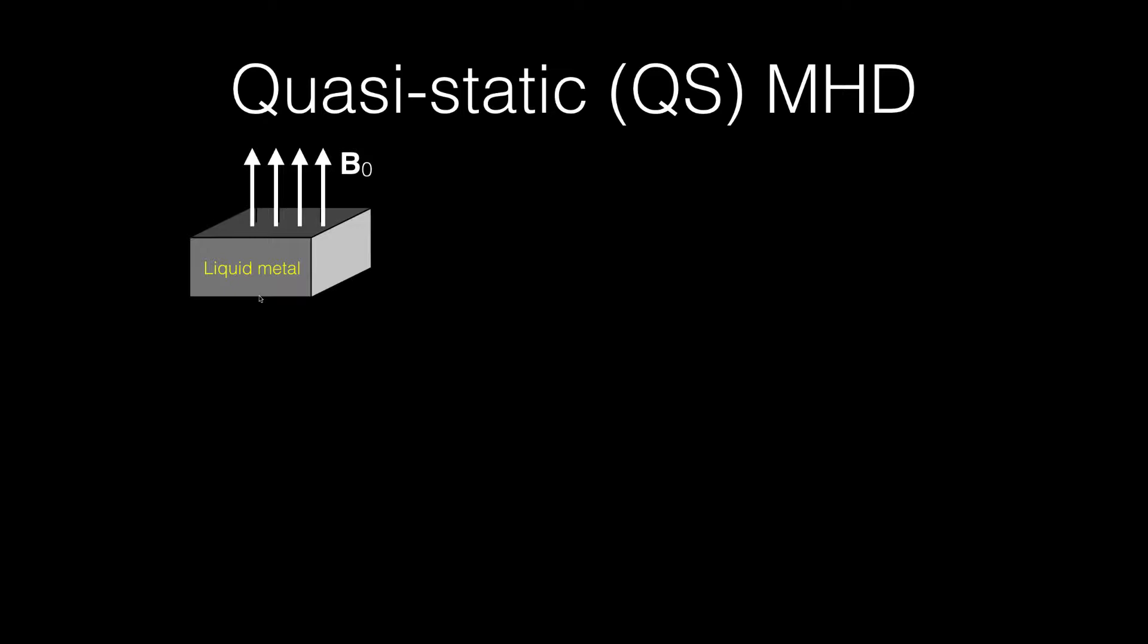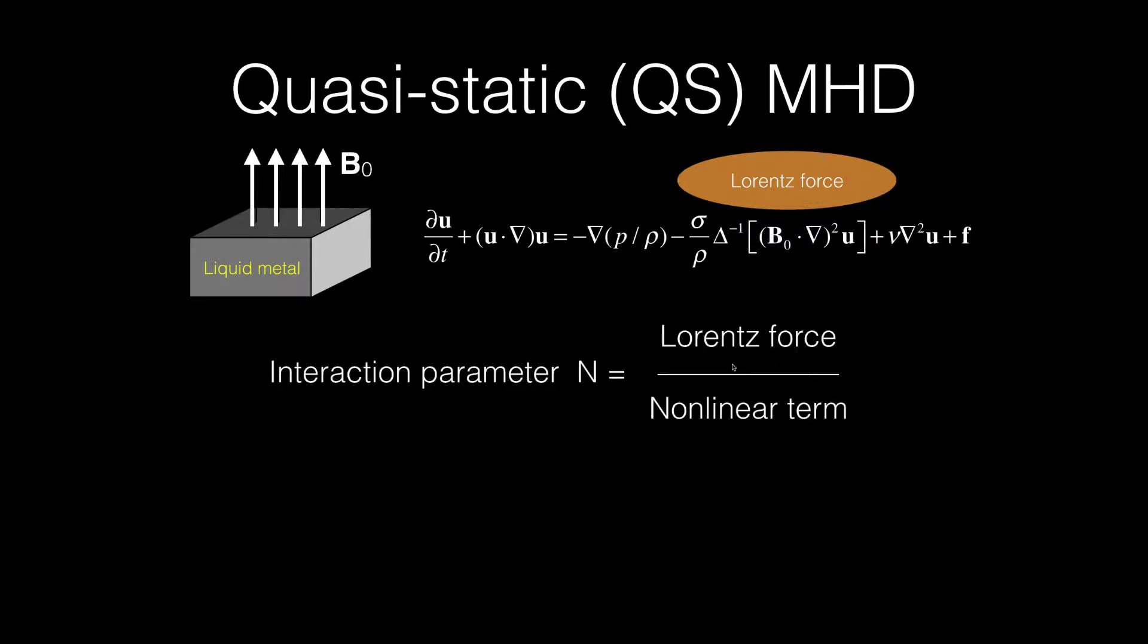The external uniform magnetic field is applied to liquid metal contained in the volume. The Navier-Stokes equation gets a new term, the Lorentz force. The ratio of the Lorentz force and the nonlinear term is called the interaction parameter N. For large N, the flow is anisotropic.